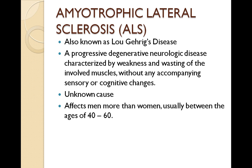Amyotrophic lateral sclerosis, also known as Lou Gehrig's disease, is a progressive degenerative neurologic disorder characterized by weakness and wasting of the muscles without any accompanying sensory or cognitive changes. Unlike Guillain-Barré, which is self-limited and the person usually regains normal function, the person with Lou Gehrig's disease does not regain normal function. It is a rapidly progressive disorder usually associated with a viral cause, and death typically ensues approximately three years after the onset of symptoms.